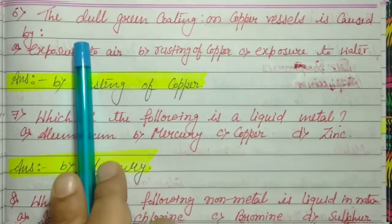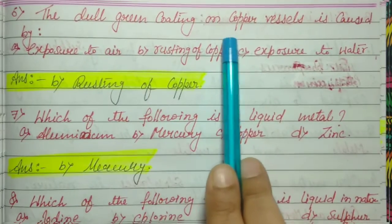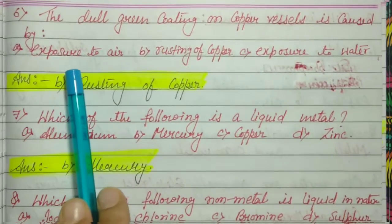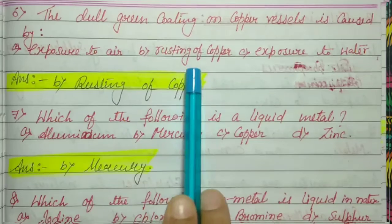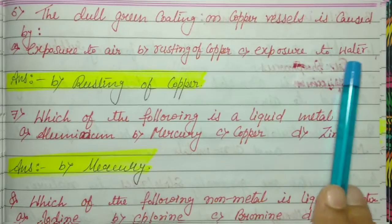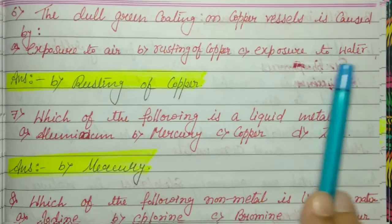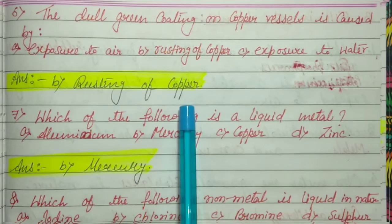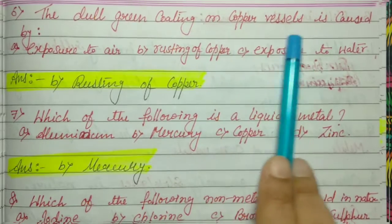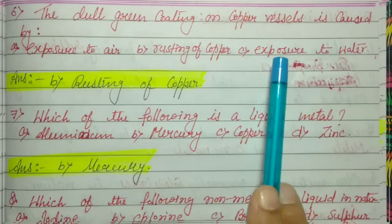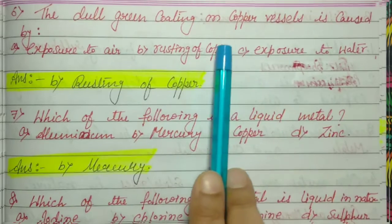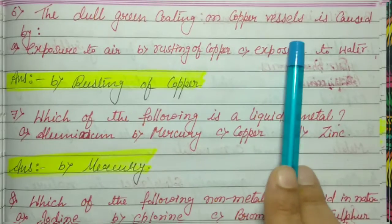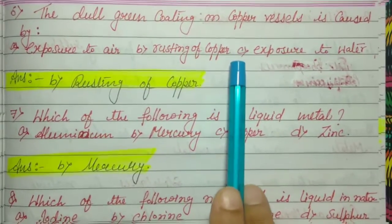Question number 6: The dull green coating on copper vessels is caused by — exposure to air, rusting of copper, or exposure to water. The answer is rusting of copper. The green-colored layer that forms on copper vessels is due to rusting of copper.